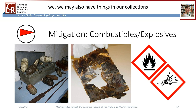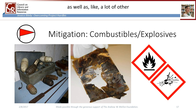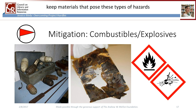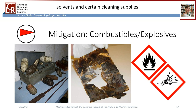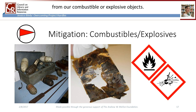On the flip side, we may also have things in our collections that were designed to be fire-retardant at a time when the materials used weren't understood as a health risk. These include objects like gas masks and fire suits, which may be made with asbestos, as well as a lot of other early firefighting equipment. Also, a surprising number of organizations keep materials that pose combustible or explosive hazards in or near collection storage areas — here we're thinking of things like solvents and certain cleaning supplies. Limiting collection storage areas to collections materials and having an emergency plan that has been shared and practiced will help reduce risk to humans and to collections.